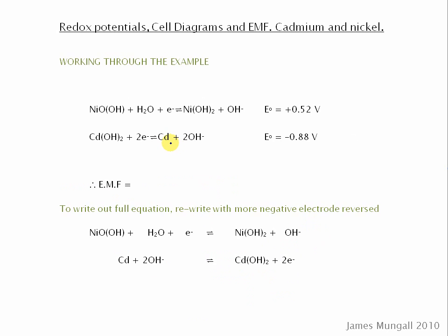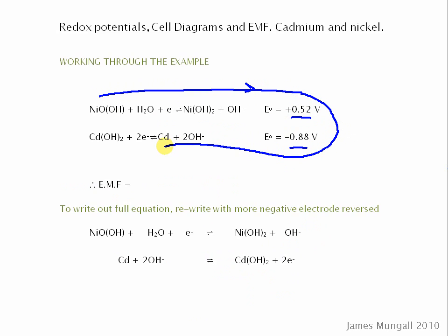Following that logic through to this example, plus 0.52 is more positive than minus 0.88. So the nickel half equation goes in the forward direction, and the cadmium one will occur in the reverse direction.